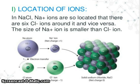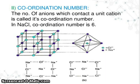Look at the packing of solid sodium chloride. Each positive ion is surrounded by six, and each negative ion is surrounded by six. That means sodium is surrounded by six chloride ions, and chlorine is also surrounded by six sodium ions. Now, what is coordination number? The number of ions which contact a unique ion, or unique cation, is called its coordination number. In sodium chloride, the coordination number is six, because sodium is surrounded by six chloride ions, and chlorine is surrounded by six sodium ions.